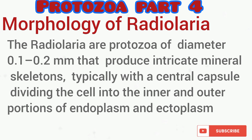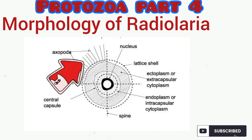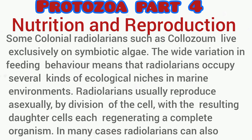Radiolaria possess a specialized type of pseudopodia called axopodia, which is the most complex type of pseudopodia. They exhibit various kinds of feeding behavior and occupy several ecological niches. Some colonial radiolarians live in symbiotic association with algae. In reproduction, they carry out cell division in an asexual mode of reproduction where cells simply divide and each daughter cell grows into an independent organism. Some also carry out sexual reproduction.